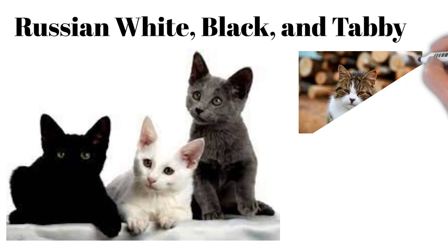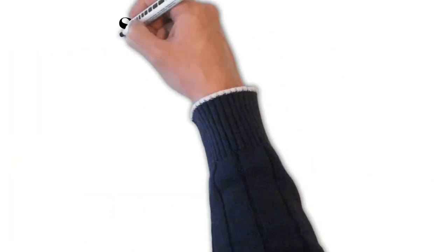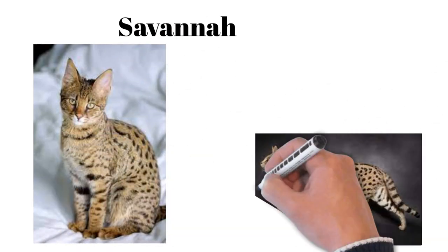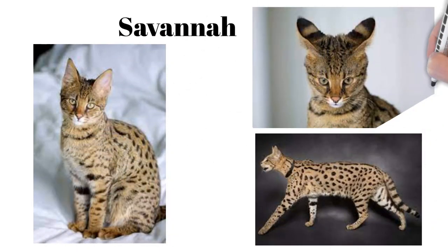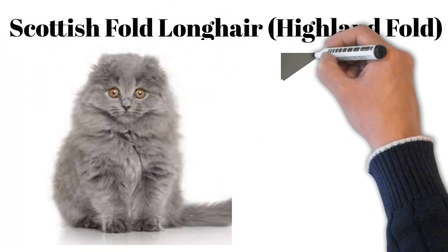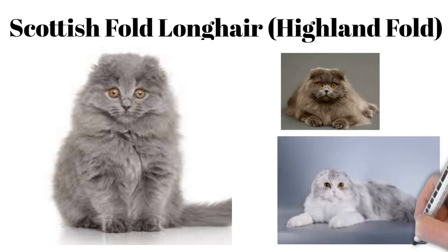Russian White, Black, and Tabby: variants of Russian Blue, same characteristics, different colors. Savannah: tall, lean, exotic appearance with bold patterns, energetic and loyal. Scottish Fold Longhair or Highland Fold: folded ears, long coat, sweet, calm, companionable.